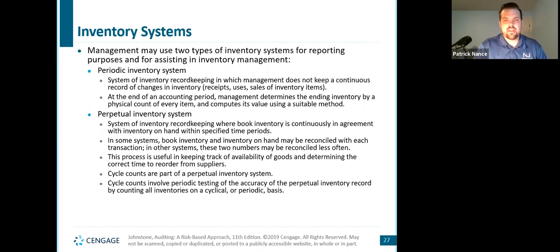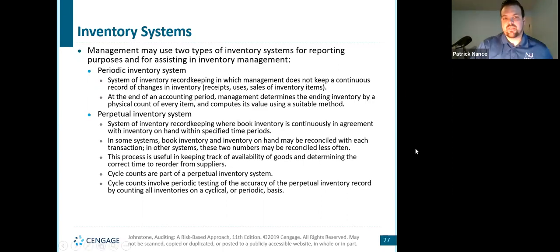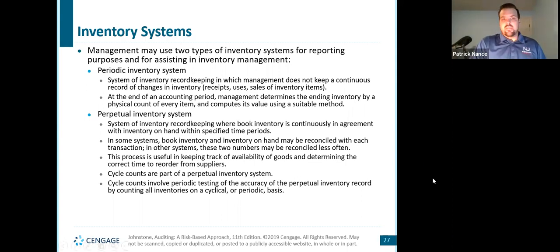A perpetual inventory system, on the other hand, records cost of goods sold every single time a sale is made — on a regular ongoing basis. This is a more accurate system and good for keeping track of availability of goods — a better way to know how much you have on hand at any given time. You keep book inventories continuously in agreement with inventory on hand. You would still go out and take regular physical counts periodically to confirm the system is working correctly and make any necessary corrections, but every sale is recorded right then and there.